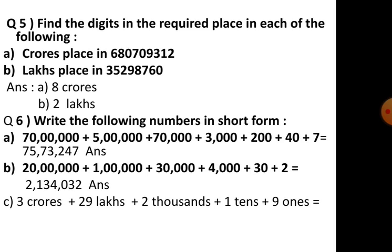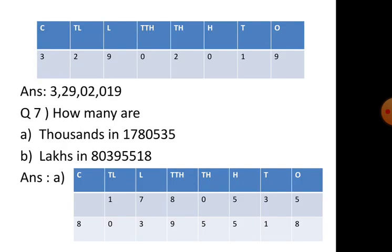Question 6: write the following numbers in short form. The numbers are given in expanded form; you add them to get the answer. For example, for number (c), using the place value chart: three crores goes in the crores place; 29 lakhs means two in ten lakhs and nine in lakhs; two is in thousands; nothing in ten thousands so we put zero; nothing in hundreds so zero; one in tens; nine in ones.